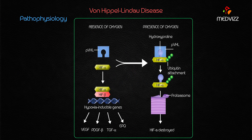The pathophysiology: the VHL gene is a tumor suppressor gene that encodes for a protein responsible for inhibiting RNA synthesis. With mutation of this gene, the ability to inhibit RNA synthesis is blocked, leading to vascular malformations and other tumors.